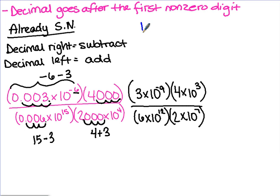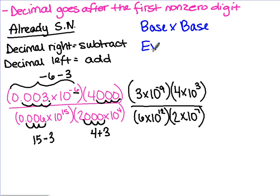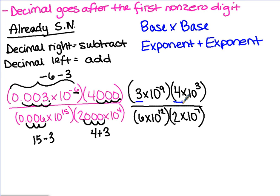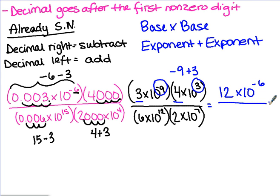When we solve, we do base times base and exponent plus exponent, and we do that for the numerator and the denominator. In the numerator, we have bases 3 and 4, so 3 times 4 is 12. Then we add the exponents: negative 9 plus 3 equals negative 6. So we now have 12 times 10 to the negative 6. In the denominator, base times base: 6 times 2 is 12. And we add the exponents: 12 plus 7 is 19.